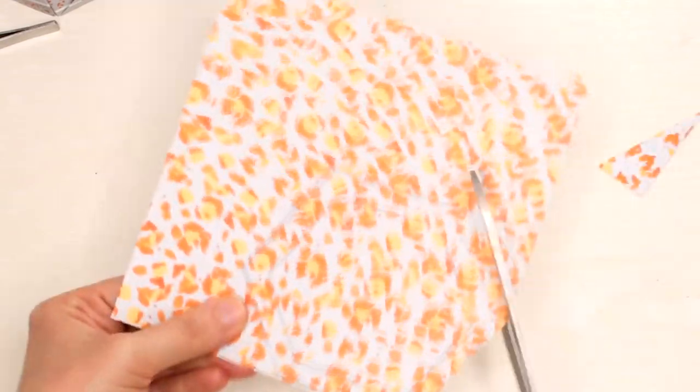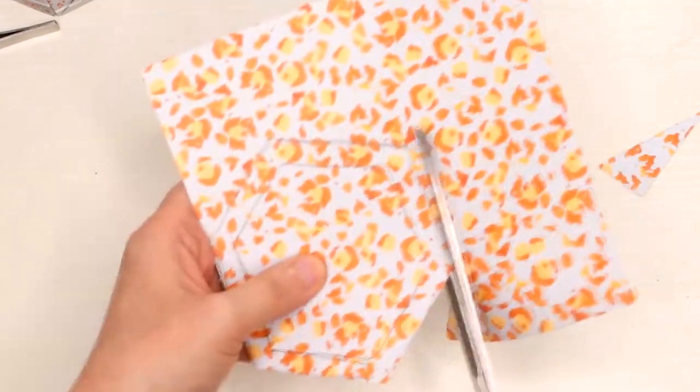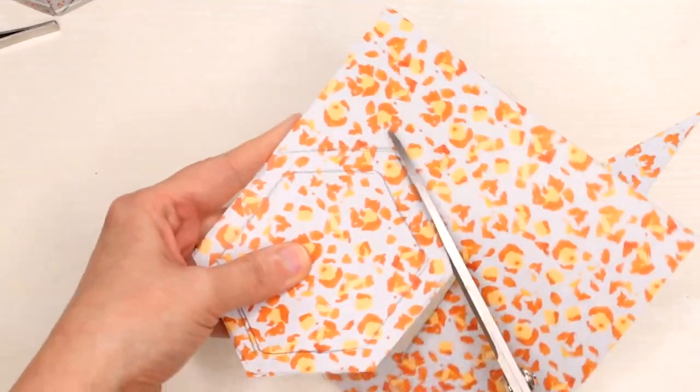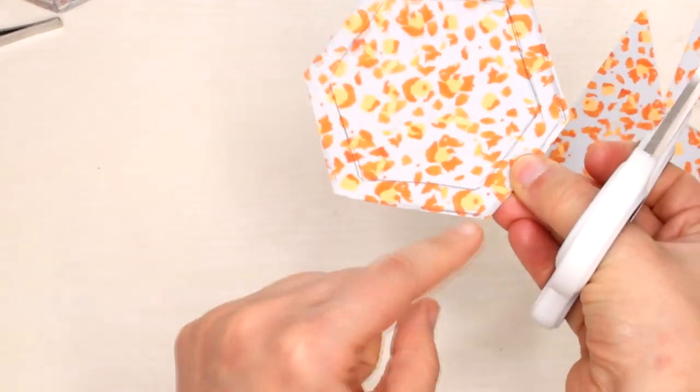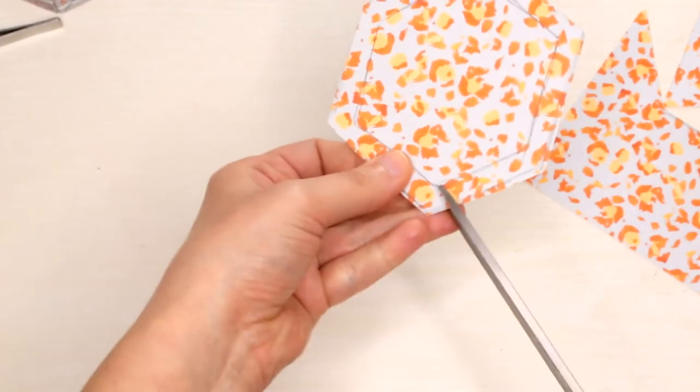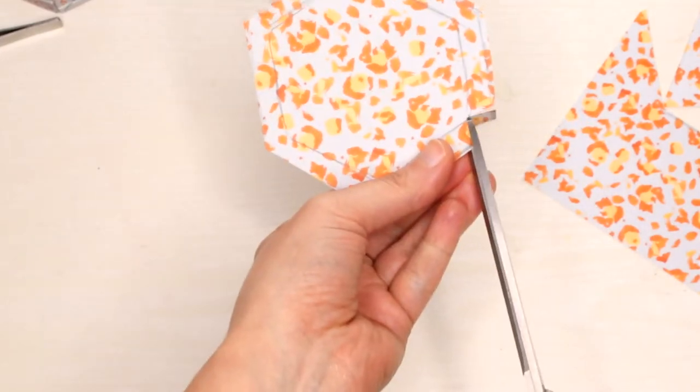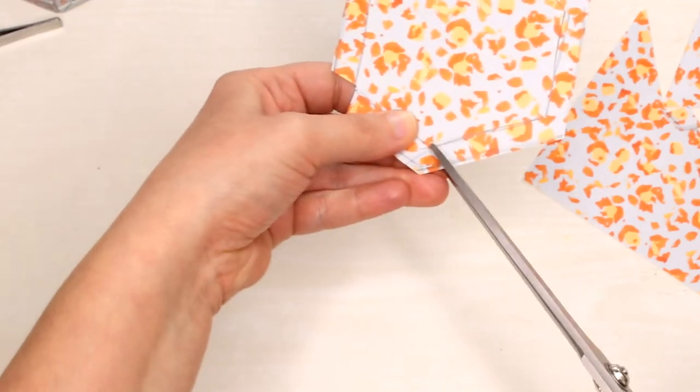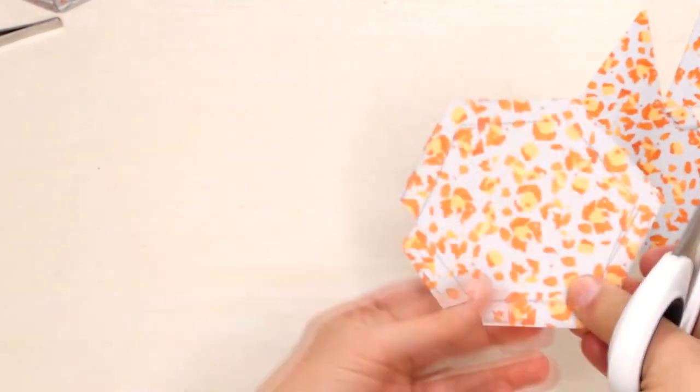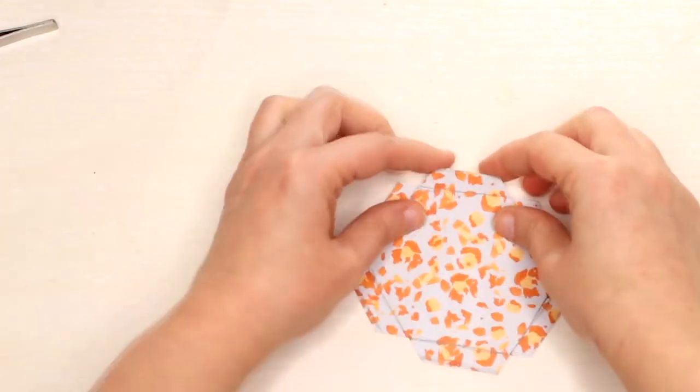So cut out the shape, then cut a notch on every corner, fold the flaps.